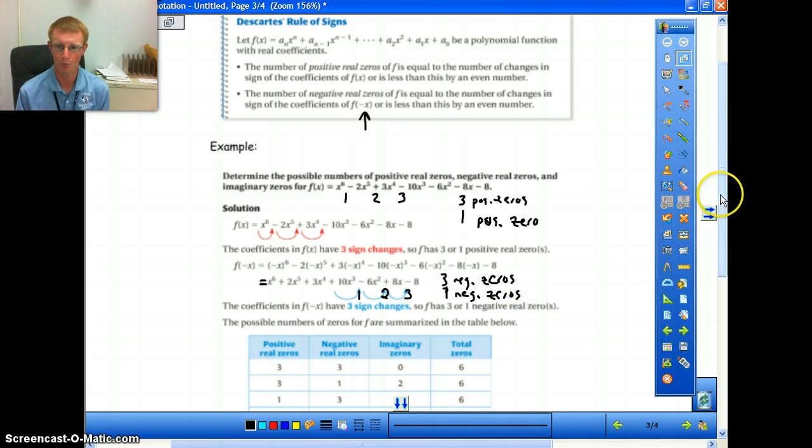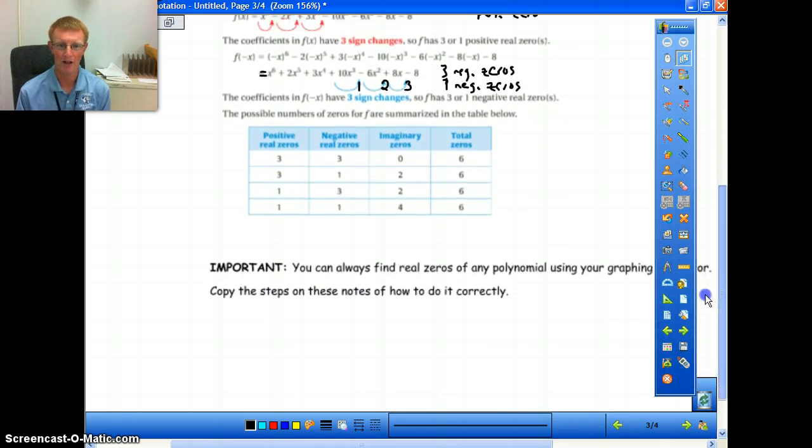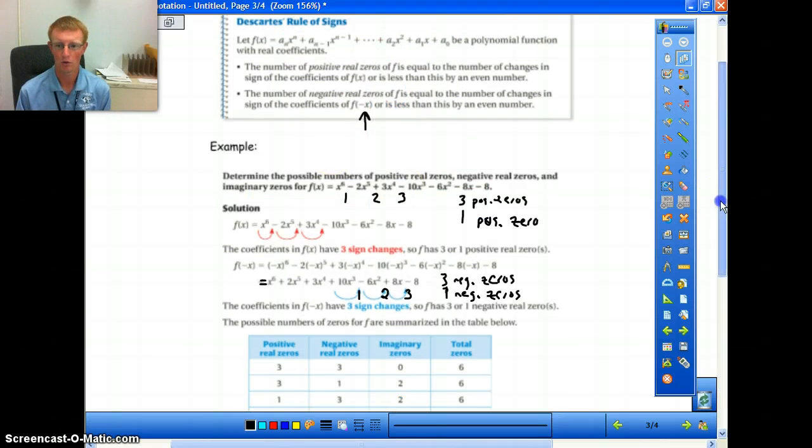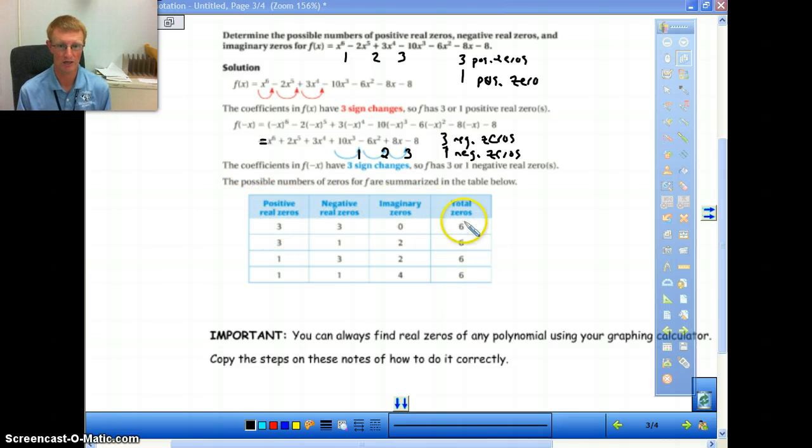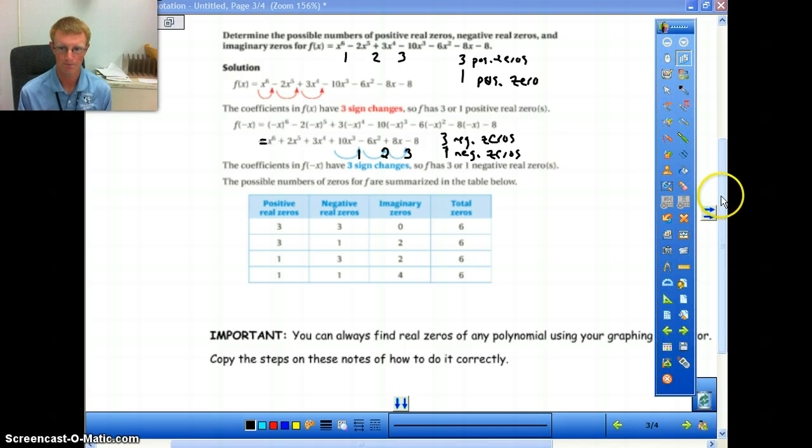And then all we're doing below is putting it into a chart. So this is what our possibilities are. We know that our total zeros is going to be 6 all the way down. So we either have a possibility of doing 3 positive, 3 negative equals 6. We could do 3 positive, 1 negative, which means we would have 2 left over imaginary is 6. And we could have 1 positive, 3 negative, still 2 left over. Or we could have 1 and 1 and 4 imaginaries. But it always has to equal the 6. So all this is a way for you to look through a problem, and you'll know exactly what types of zeros you're going to get right away.